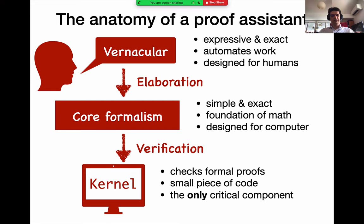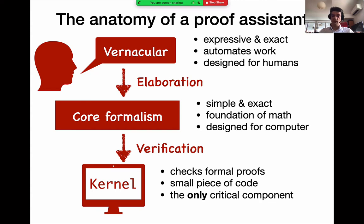The actual verification is carried out by a special component called the kernel. This component checks formal proofs. It doesn't perform any automated tasks — that's part of the vernacular. It is served the actual proofs and constructions and definitions, and the only thing it has to do is verify that they follow the formalism. It is important to understand that this is the only critical component of a proof assistant. The vernacular might be hundreds of thousands of lines of code, but it doesn't matter if there's a bug there as far as mathematical correctness is concerned. If there is a bug in the kernel, however, mathematical correctness may be compromised. So kernels are designed to be very small — some are just a few hundred lines of code — and they are carefully audited.